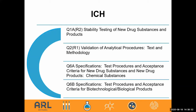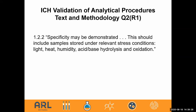Some of the ICH guidelines: Q1A talks about stability testing of new drug substances; Q2 covers validation of the analytical procedure in quite a bit of detail on parameters and how to validate; Q3 covers test procedures and criteria for both new drug substances and drug products; and Q6B is interesting in that with the development over the last decade of proteins, peptides, and larger biological products, specifications are listed for them — which is a challenge given the nature of the testing and assays involved.